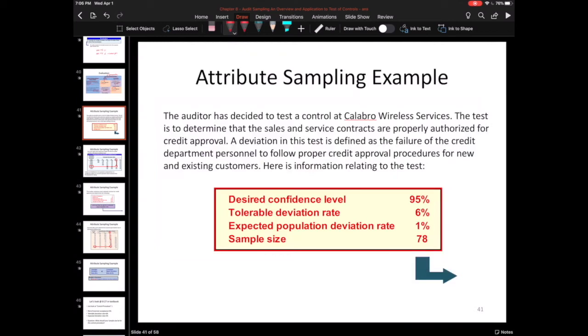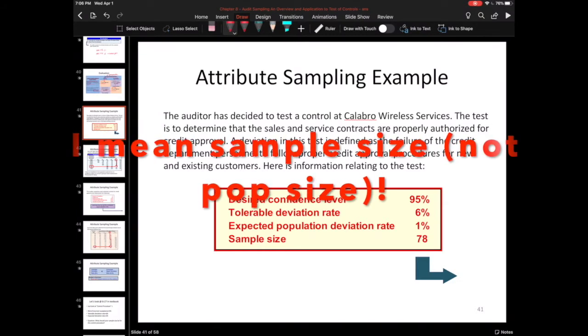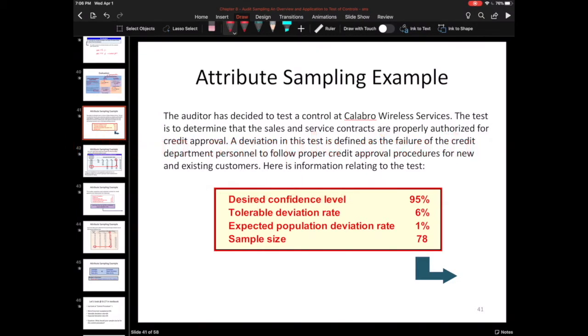So now we're going to walk through just a couple examples of calculating the population size, the sample error rates, and the upper deviation rates.